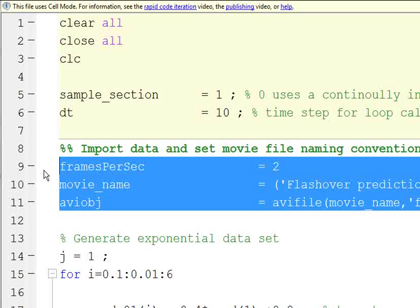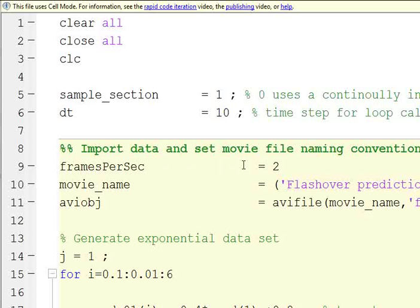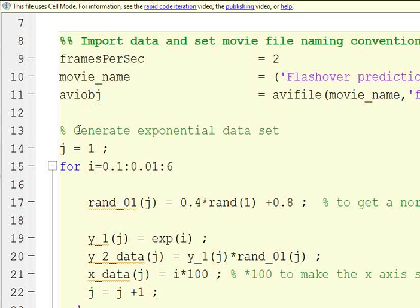These three lines are part of the video generation code. You're going to say how many frames per second, you're going to give the movie a name, and then you're going to start the AVI file. You're going to open it up.